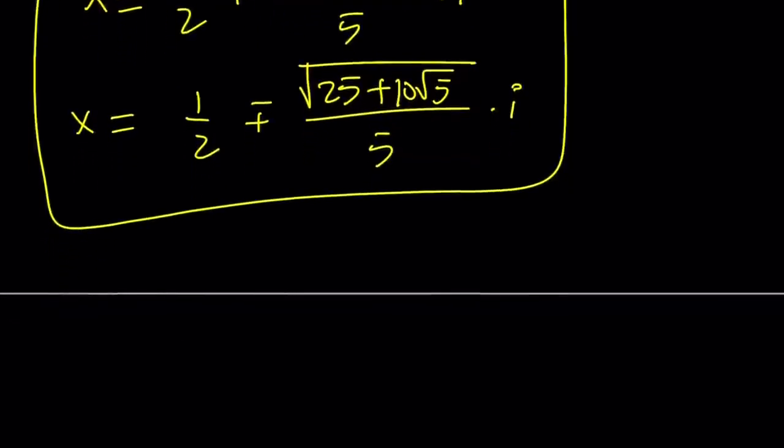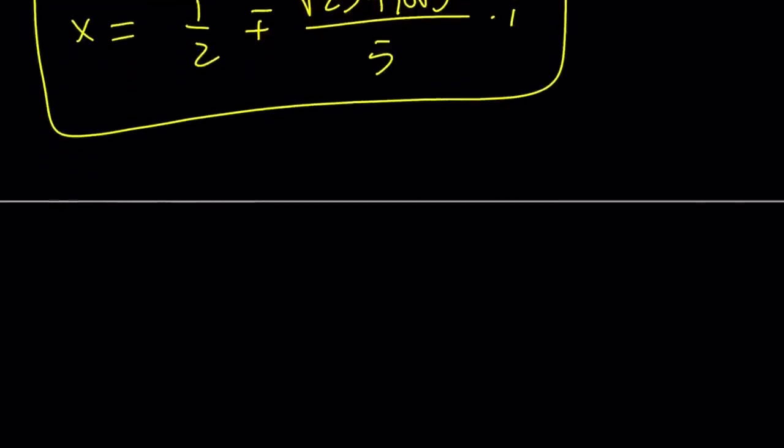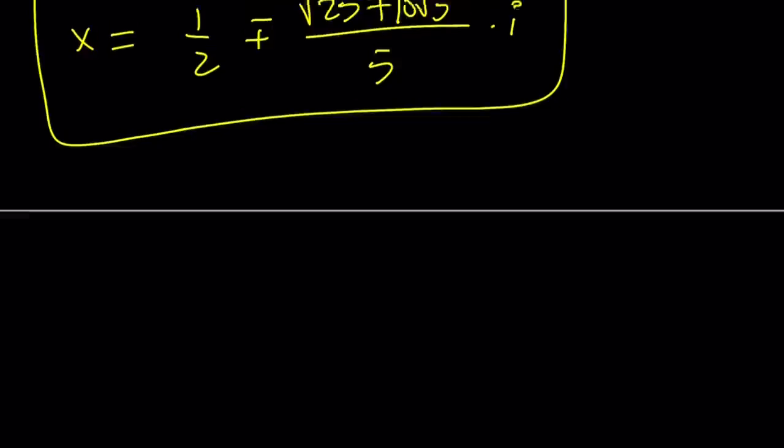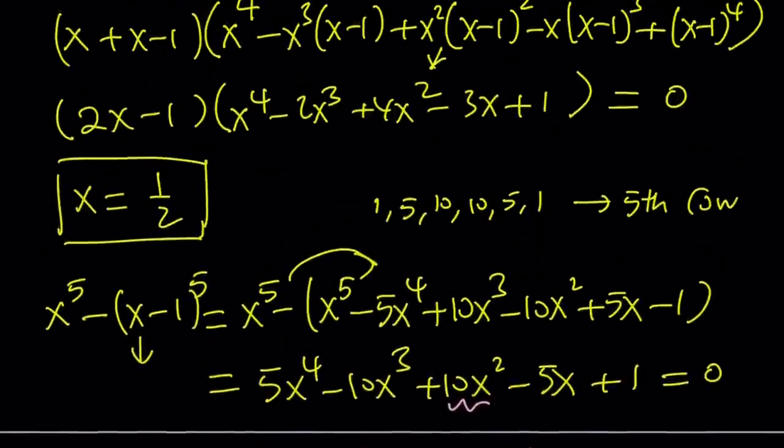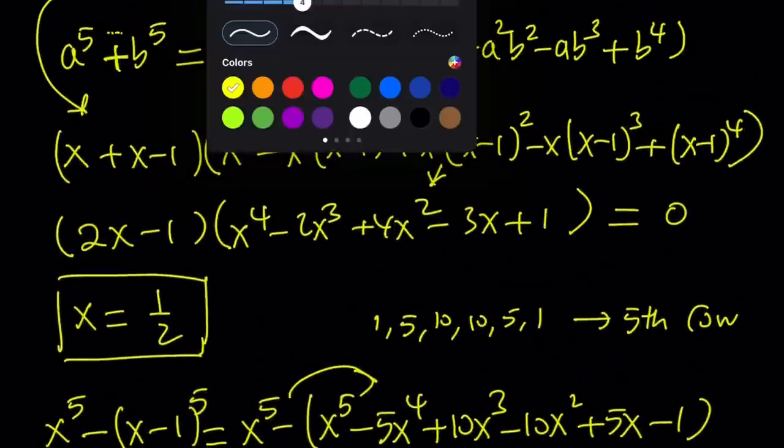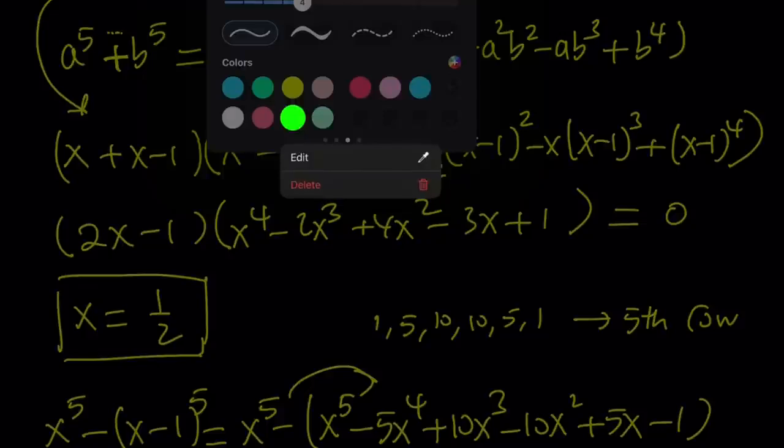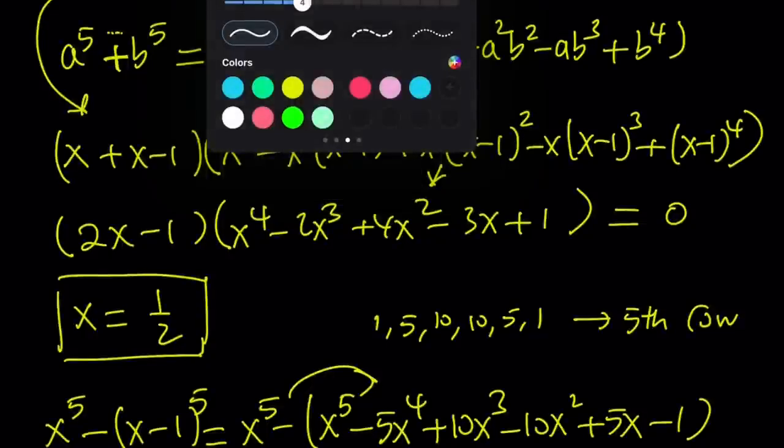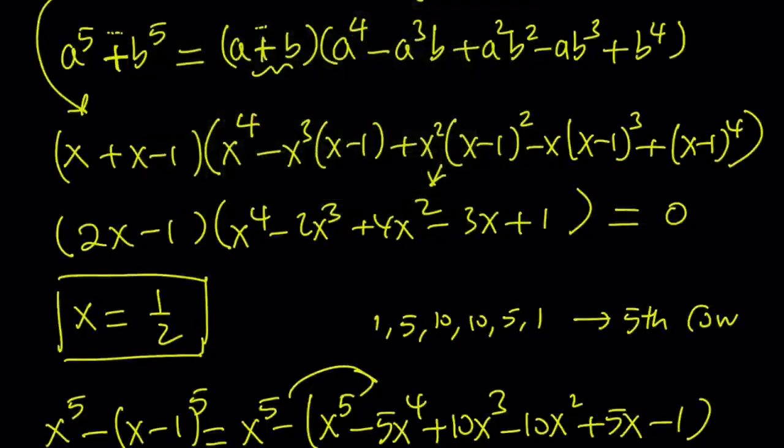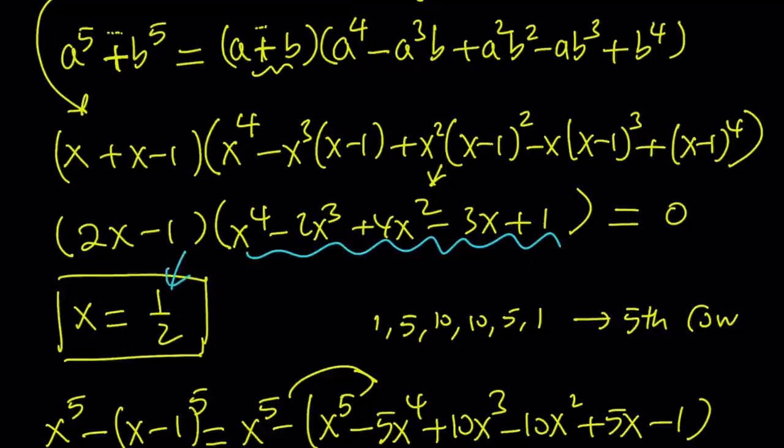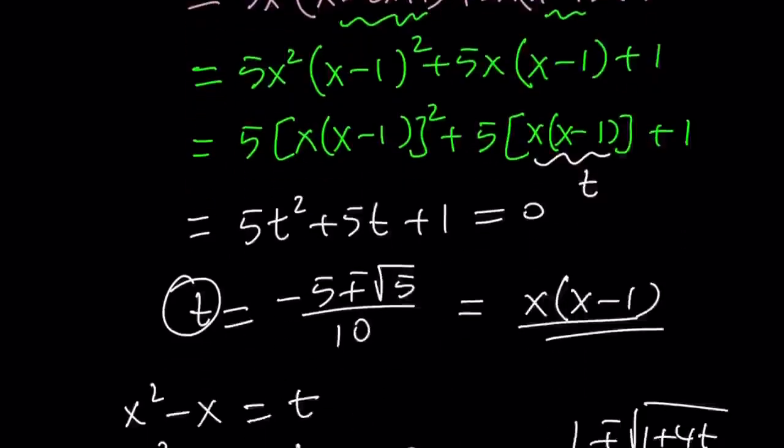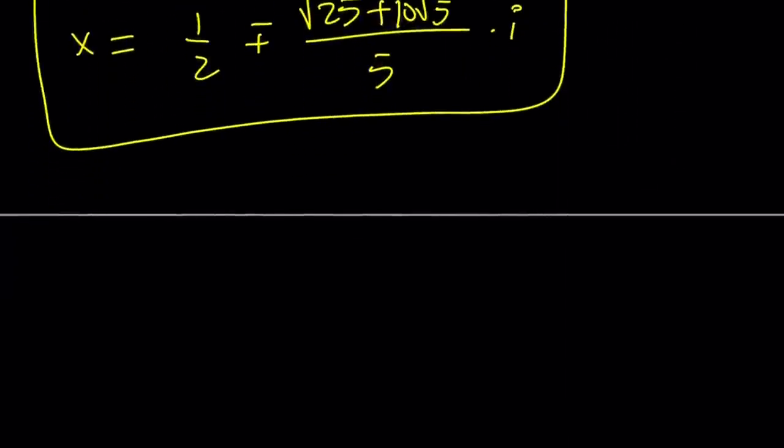So basically what happens with the other ones, because we had two equations, right? Remember we had two equations. The other factor here, we haven't done this. We only found x equals one half from here. And now let's go ahead and solve that quartic because we have two quartics.